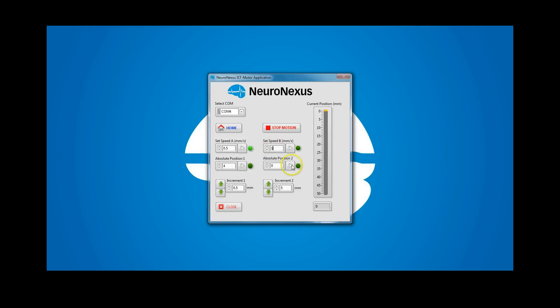To complement the macro-scale adjustments of a stereotaxic frame, the IST motor is capable of 50 mm of movement, with step sizes as small as 0.05 micrometers. Insertion speed is adjustable.